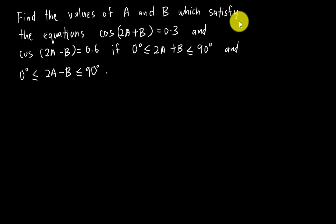The question asks you to find the values of A and B which satisfy the equations cos(2A+B) = 0.3 and cos(2A-B) = 0.6, if they give you a range where 0° ≤ 2A+B ≤ 90° and 0° ≤ 2A-B ≤ 90°.